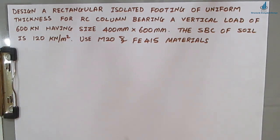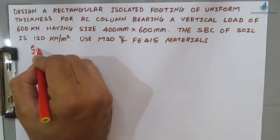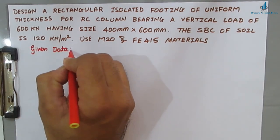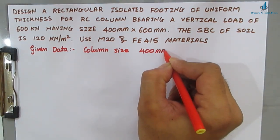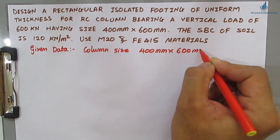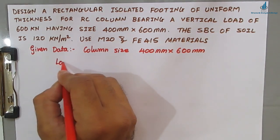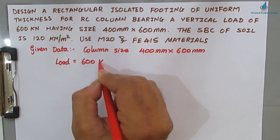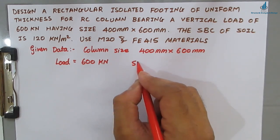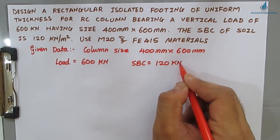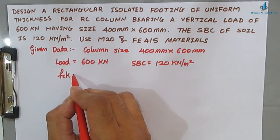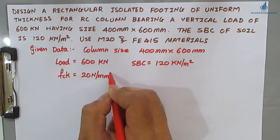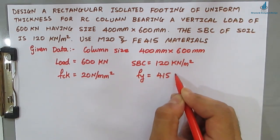The first step in any RCC problem is to write down the given data. Column size: 400 mm × 600 mm. Load W = 600 kN. SBC = 120 kN/m². Materials: fck = 20 N/mm² and fy = 415 N/mm².